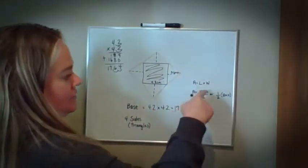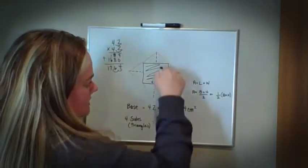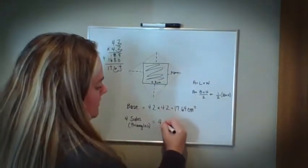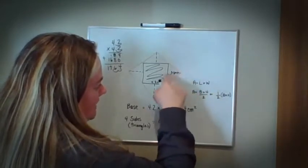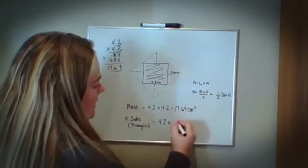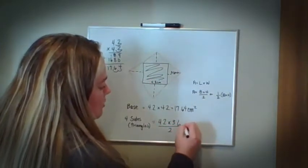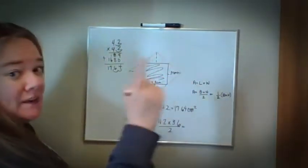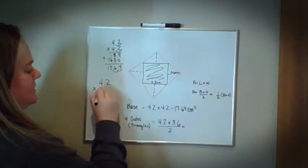Area of a triangle is base times height divided by two. This is my base, 4.2. Remember that's the same here. 4.2 times my height, that's this dash line, 3.6 divided by two. That will be for one triangle. Again, I'm going to show my work, 4.2 times 3.6.